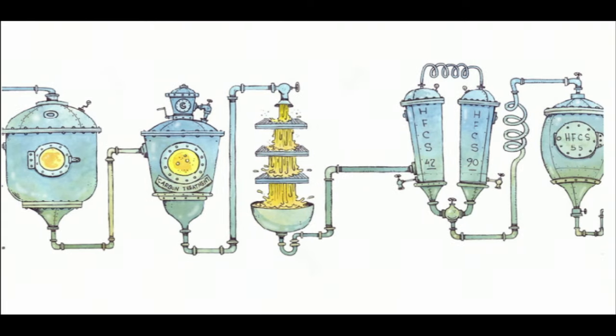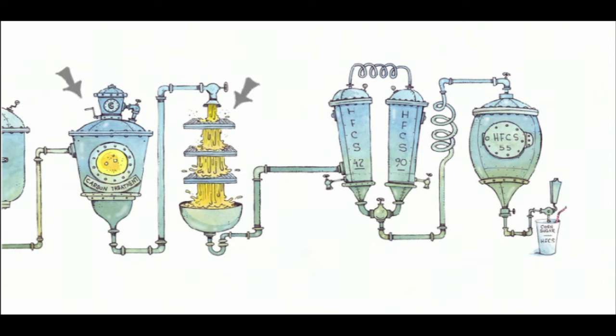From there, the liquid is passed through activated carbon and filtered. The final product is called HFCS 42 and is used to sweeten many baked goods.